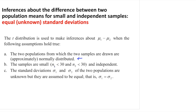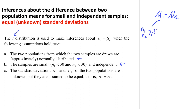We use the T distribution when the sample size of the two groups are less than 30 and they are independent groups. When the population standard deviations are unknown but assumed to be equal, we use the T distribution. We've previously tested hypotheses for the difference of two population means when the sample size for both groups is large — greater than or equal to 30 — using the normal distribution.